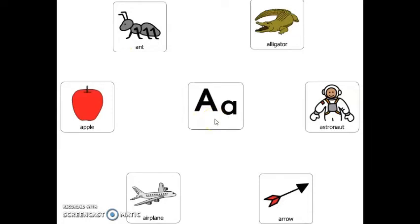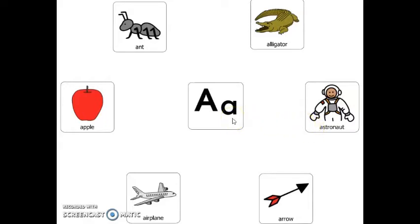Now, let's play a game. What word that starts with the letter A is something you can eat? An apple. What word that starts with the letter A is something that has sharp teeth? An alligator. What word that starts with the letter A flies in the sky? Airplane. What word that starts with the letter A explores outer space? An ant. What word that starts with the letter A tells us which direction to go? Arrow.